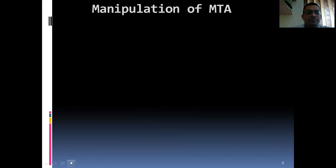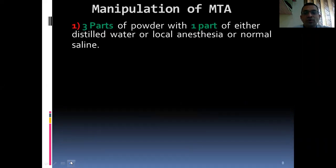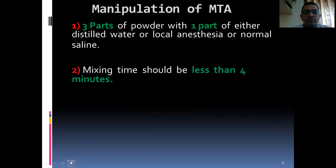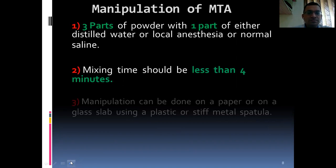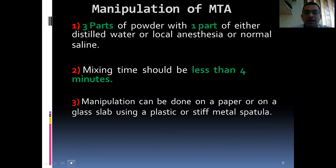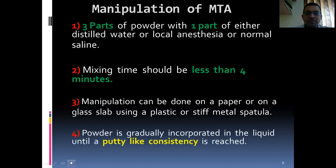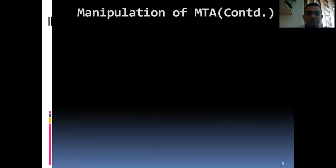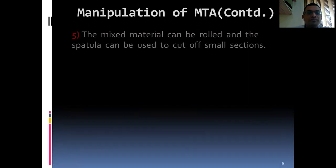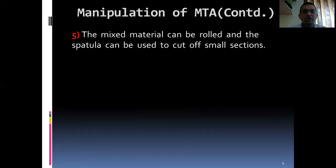Manipulation of MTA: three parts of powder with one part of either distilled water, local anesthesia, or normal saline. Mixing time should be less than 4 minutes. Manipulation can be done on a paper or glass slab using a plastic or stiff metal spatula. Powder is gradually incorporated in the liquid until a putty-like consistency is reached.